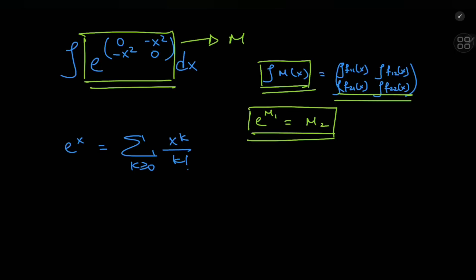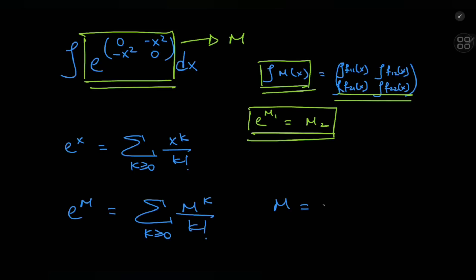The matrix exponential function is defined in analogy to the regular exponential function e to the x, which we know can be expanded as the sum over non-negative integers k of x^k divided by k factorial. So, in analogy to the series expansion, we define e to some matrix M as the sum over non-negative integers k of M^k divided by k factorial. Now we have some idea of how to feed the exponential function matrices, but we normally prefer to diagonalize it.